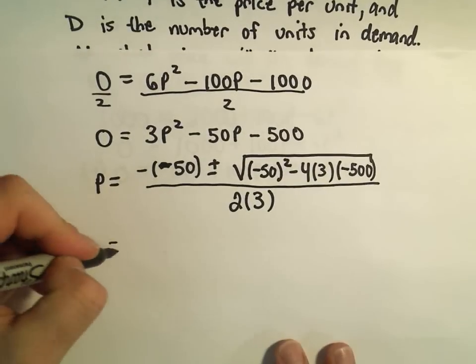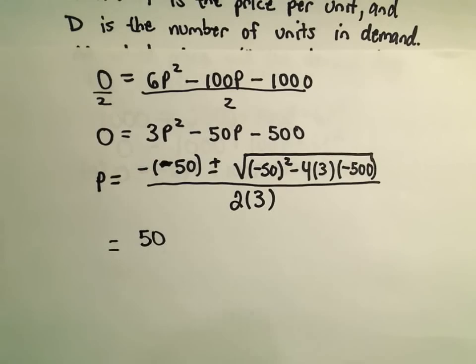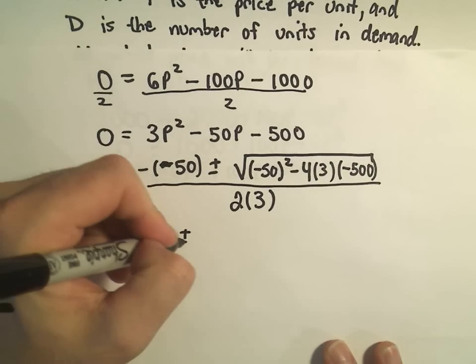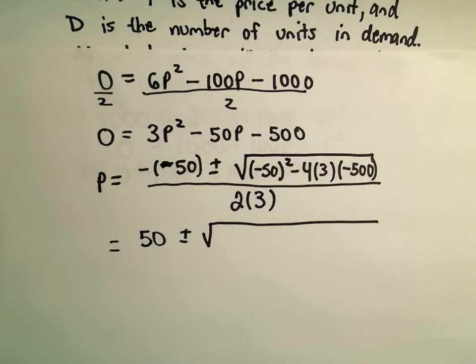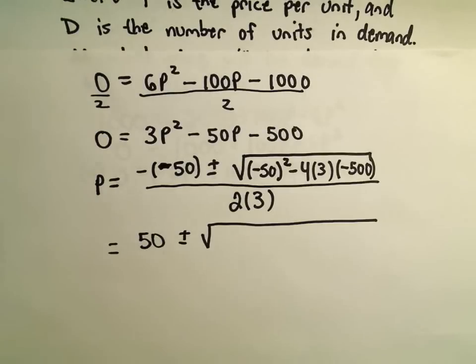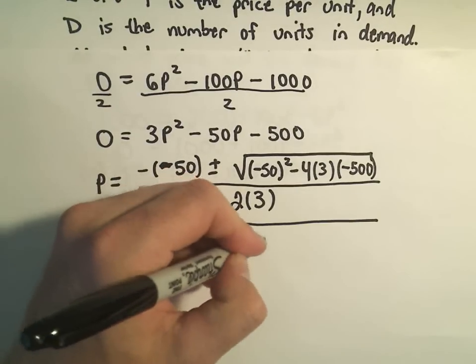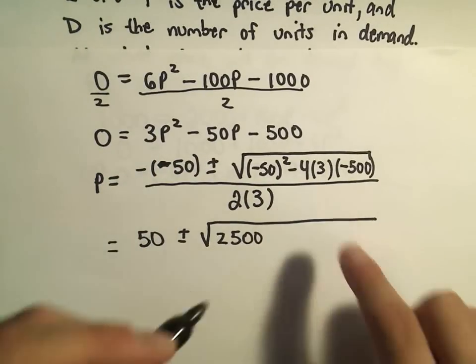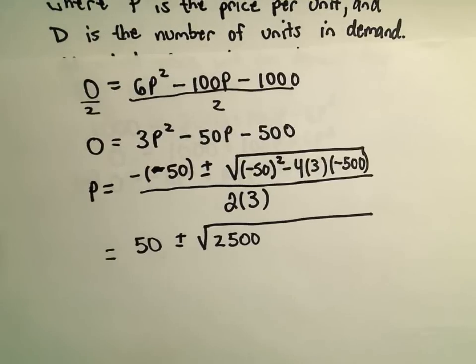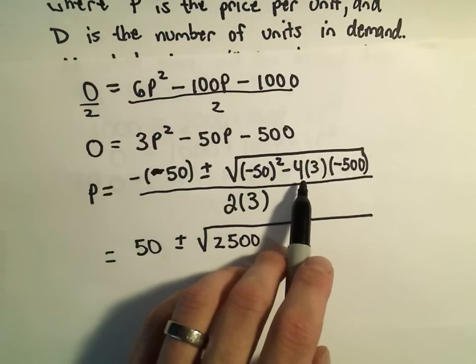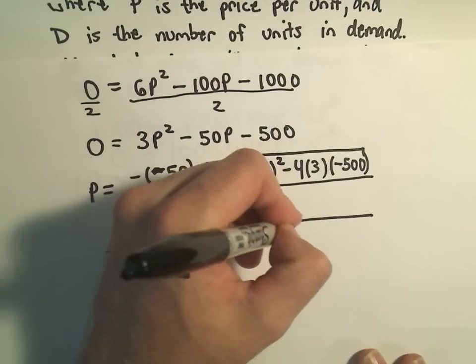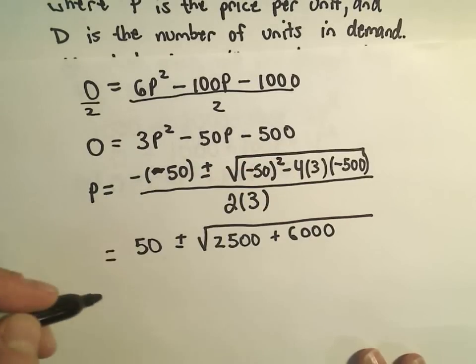So it looks like in this case we're going to get positive 50, and then we've got plus or minus. When we take negative 50 times negative 50, that's going to give us positive 2,500. Then we'll have negative 4 times 3, which is going to give us negative 12. And we then multiply the negative 12 by 500, that's going to give us a positive 6,000.